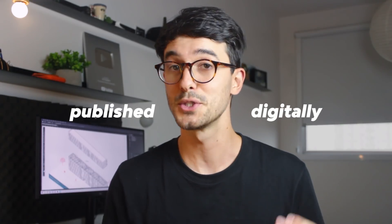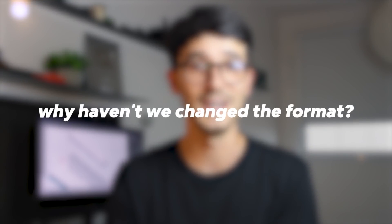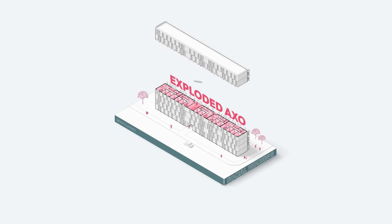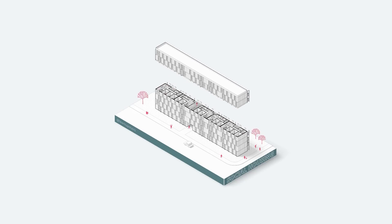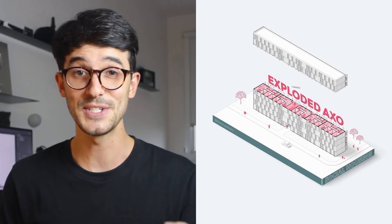More and more, an architect's work has been published digitally. Social media plays a major role in how we express ourselves professionally. The medium has changed — we moved from portfolios needing to be a physical thing to being totally digital. So why haven't we changed the format? We're still creating the same type of images and publishing portfolios online as if they were printed. Digital portfolios give you so much freedom that I feel we're not taking full advantage of that. Why have only static images if you can combine subtle movements to add interest? Today I'm going to show you how to create an exploded axonometric animation.